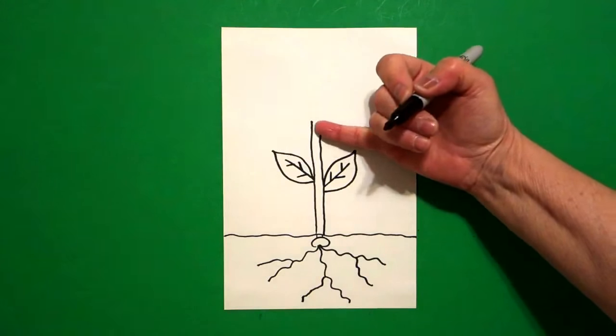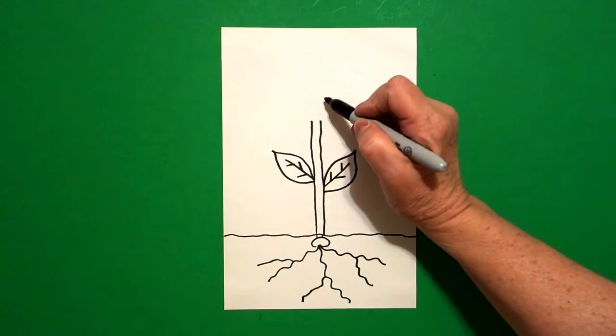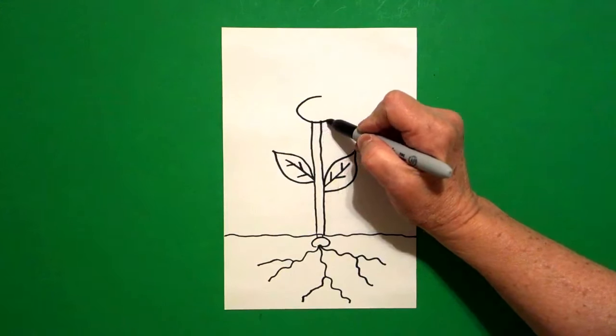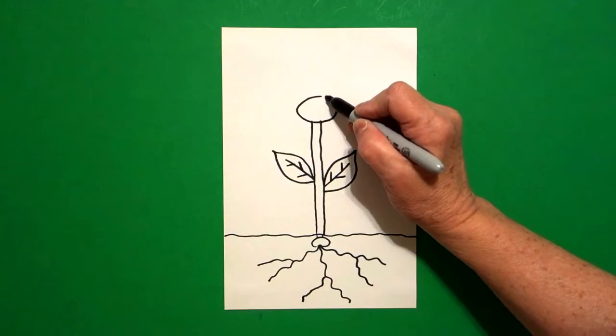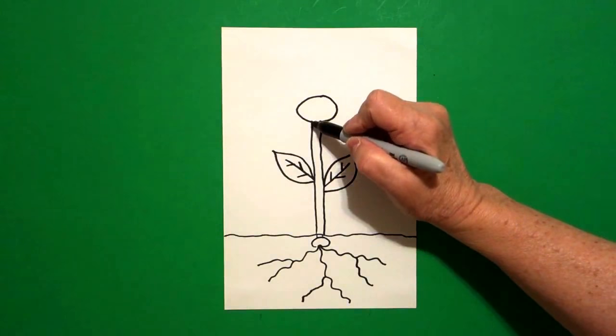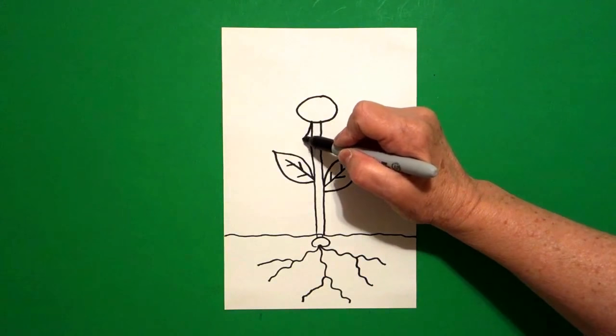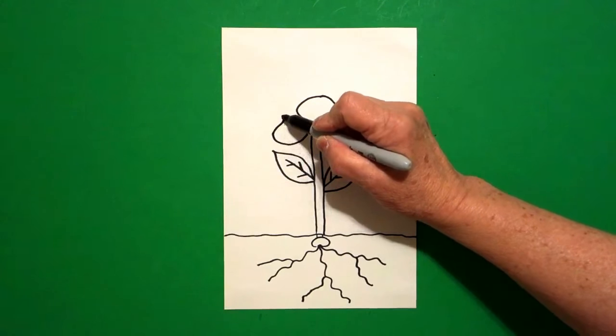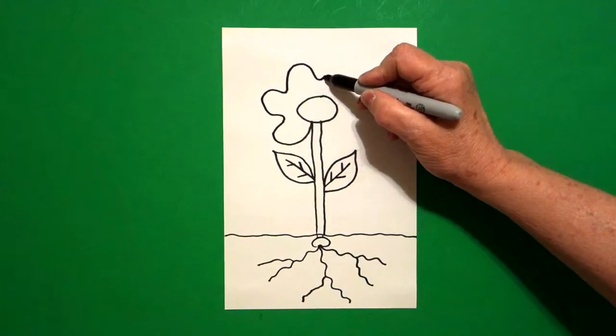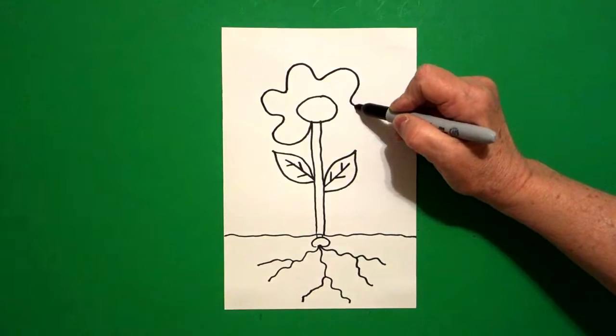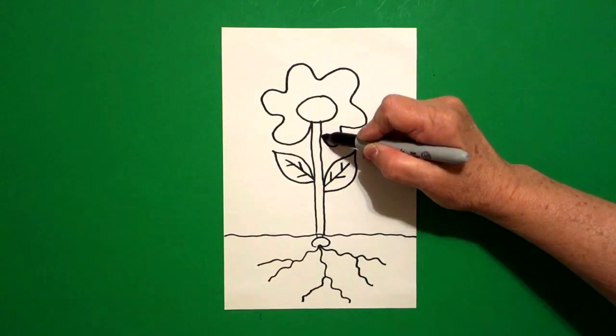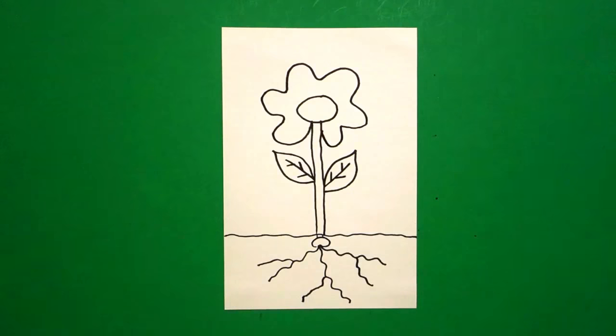I come all the way up here to the top and I'm going to draw a flat oval or a flat pizza, curve line, curve line, curve line, connect. I come over here on the left hand side and I draw a curve line out, in, out, in, out, in, keep going, out, in, out, in, connect.